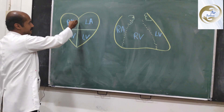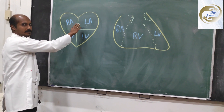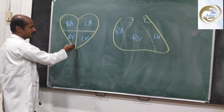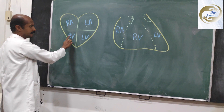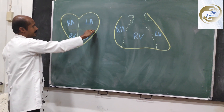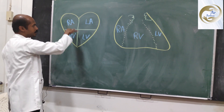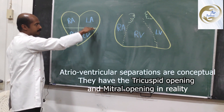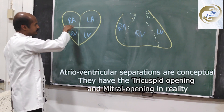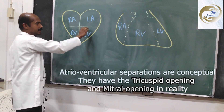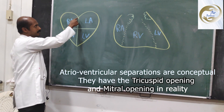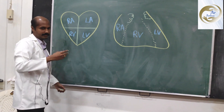This is the interatrial septum separating the right atrium from the left atrium. This is the interventricular septum separating the right ventricle from the left ventricle. And these are the atrioventricular septa — the partition separating the atrium from the ventricle. This is the right part of that partition and this is the left part of that partition. You can easily note that there is a cross over here.